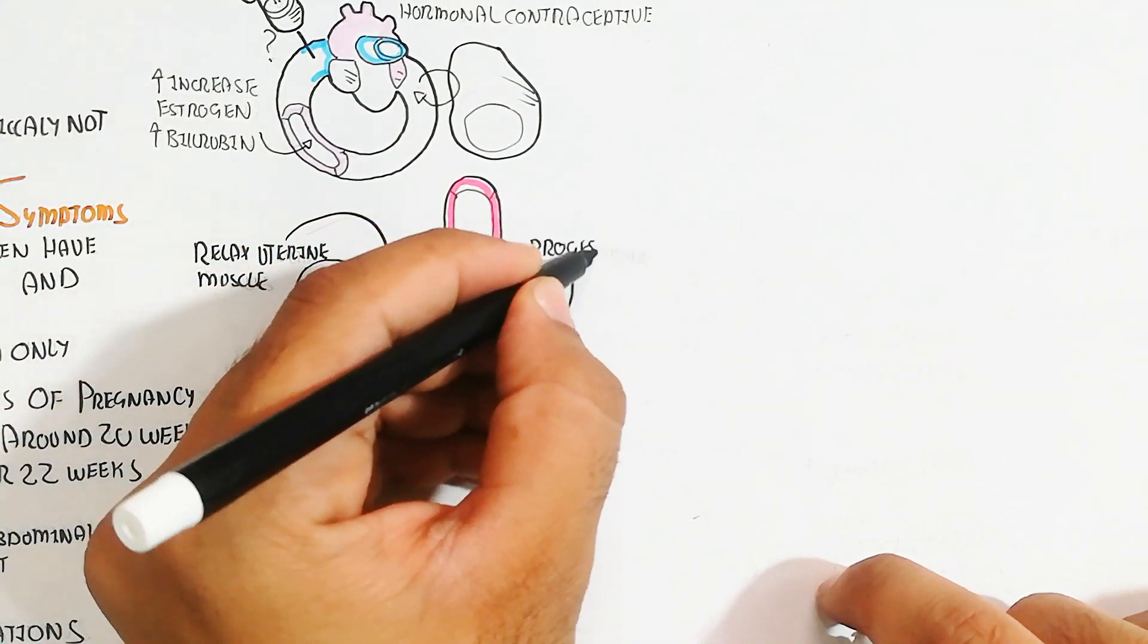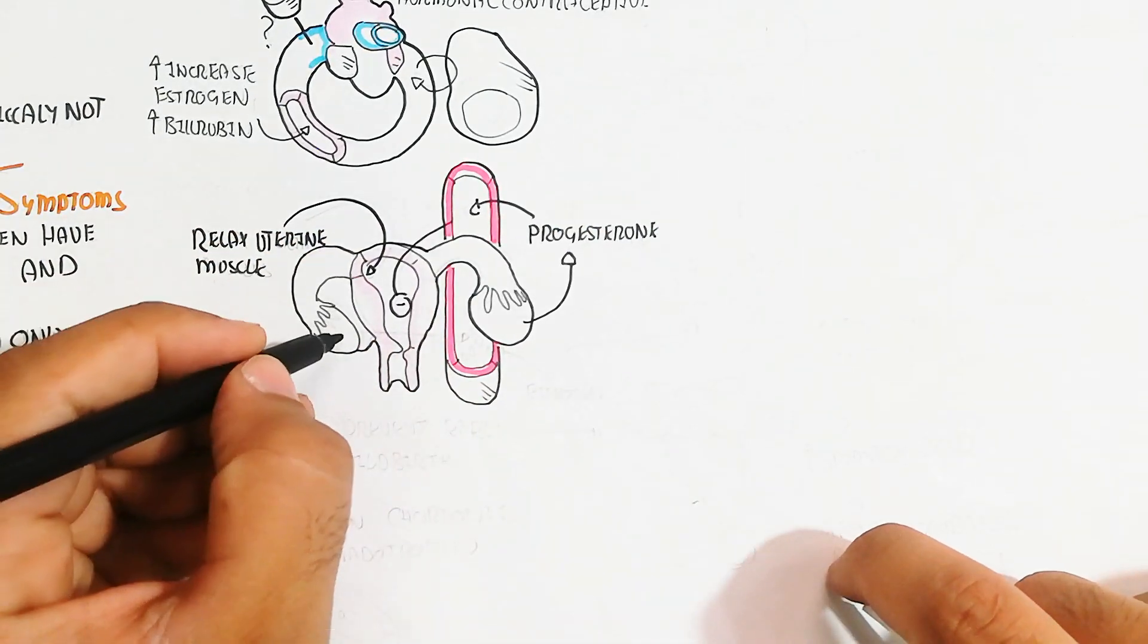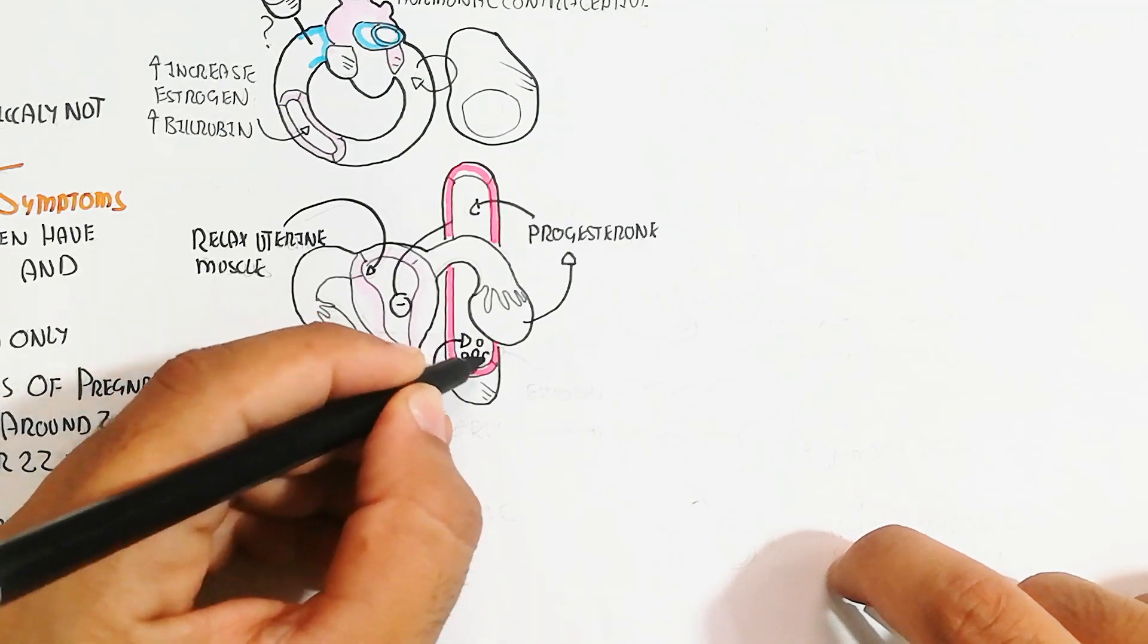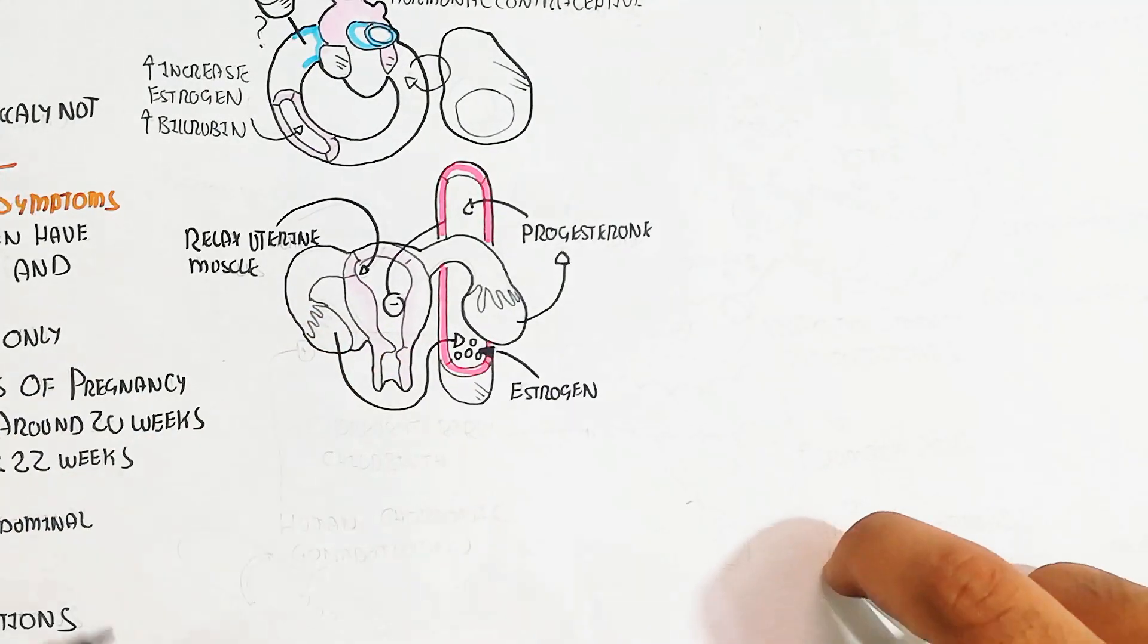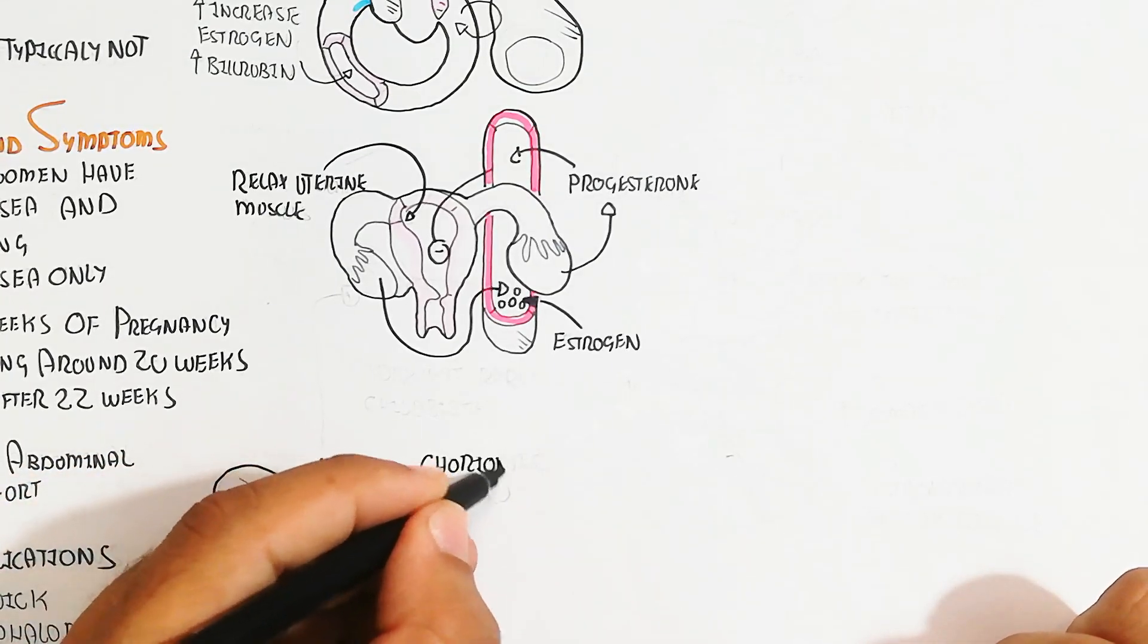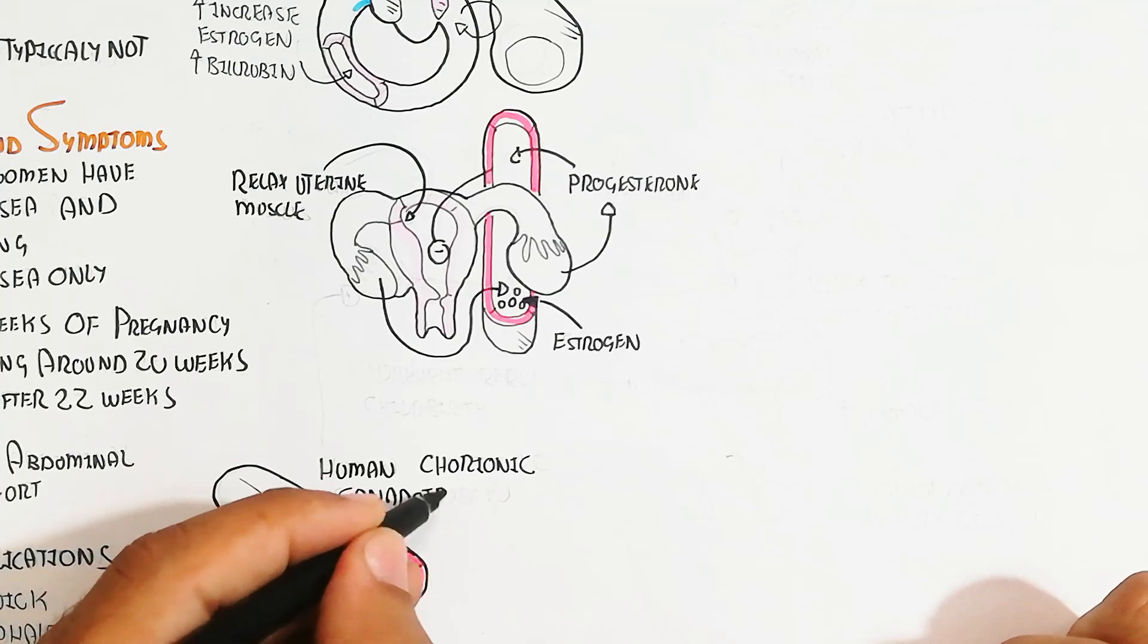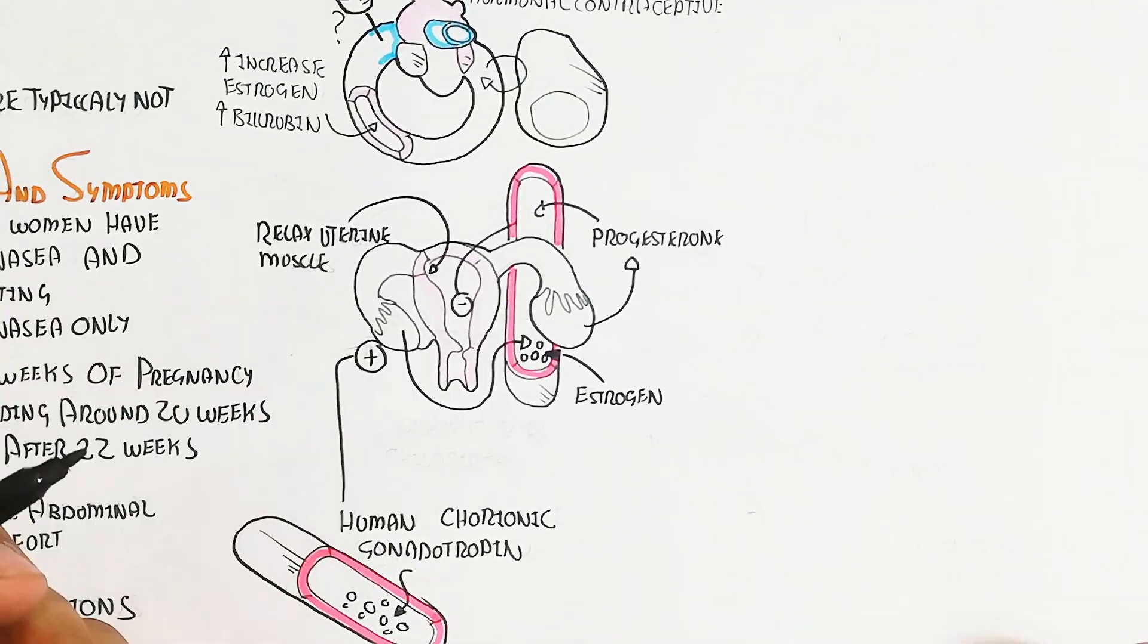The reproductive system of female contains ovary, fallopian tube, uterine wall, and uterus and blood vessels. Progesterone releases from the ovary after pregnancy and enters into the blood circulatory system, leading to relaxation of the uterine muscle and wall.